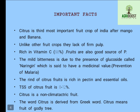The mild bitterness in citrus is due to the presence of a glycoside called naringin, which has medicinal value and is used for the prevention of malaria. The rind of citrus fruit is rich in pectin and essential oils. The total soluble solids present in citrus fruit is 8 to 12 percent. Citrus is a non-climacteric fruit, meaning it ripens on the tree itself. The word 'citrus' is derived from the Greek word 'kedros,' meaning 'godly tree.'